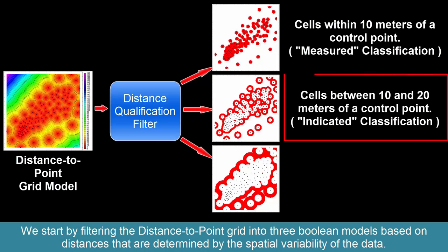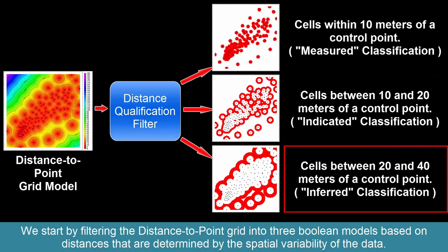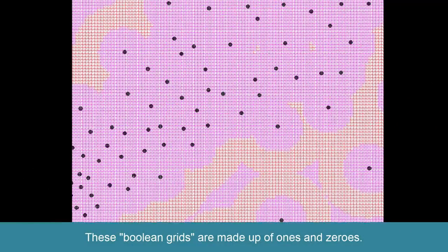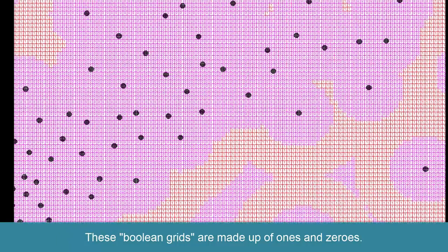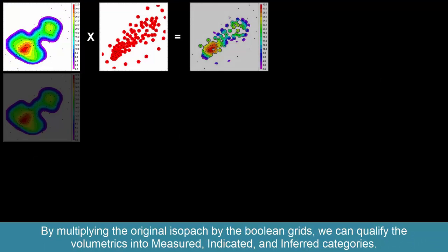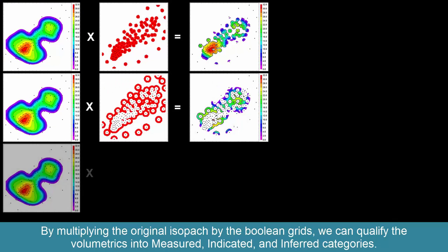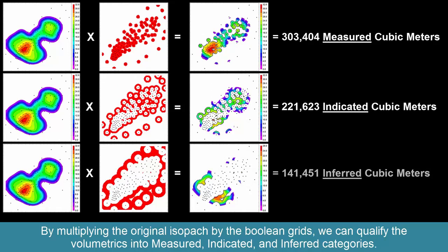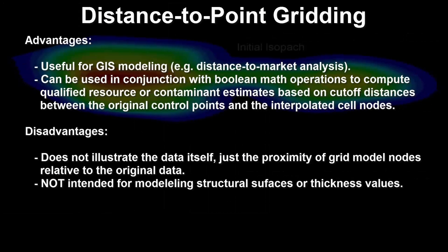The indicated classification will be considered as cells between 10 and 20 meters of a control point. The inferred classification will be considered as cells between 20 and 40 meters of a control point. All other cells will be discarded. These Boolean grids are made up of ones and zeros. By multiplying the original isopack by the Boolean grids, we can qualify the volumetrics into measured, indicated, and inferred categories.